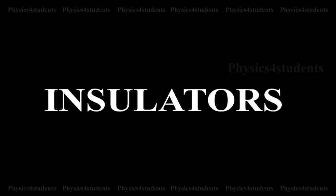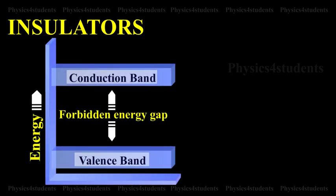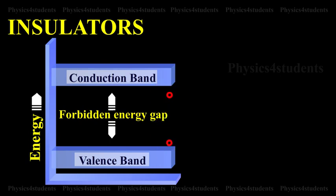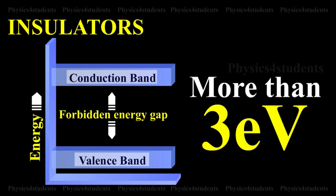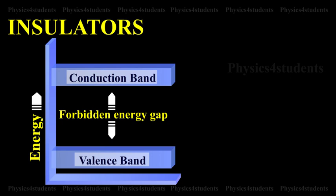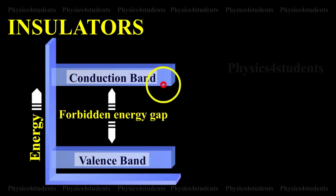In an insulator, the forbidden energy gap is very large. In general, the forbidden energy gap is more than 3 electron volts and almost no electrons are available for conduction. Therefore, a very large amount of energy must be supplied to a valence electron to enable it to move to the conduction band.